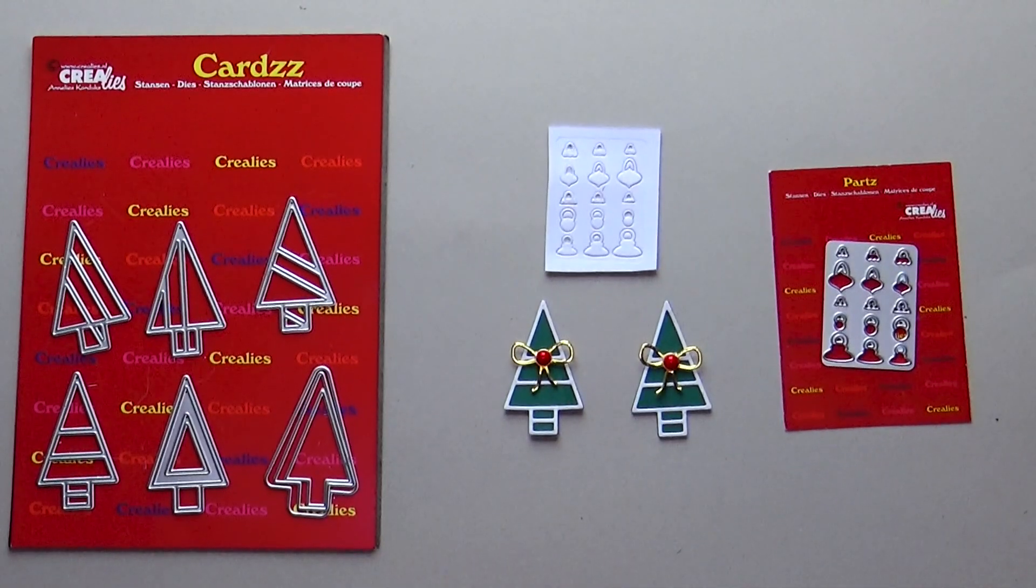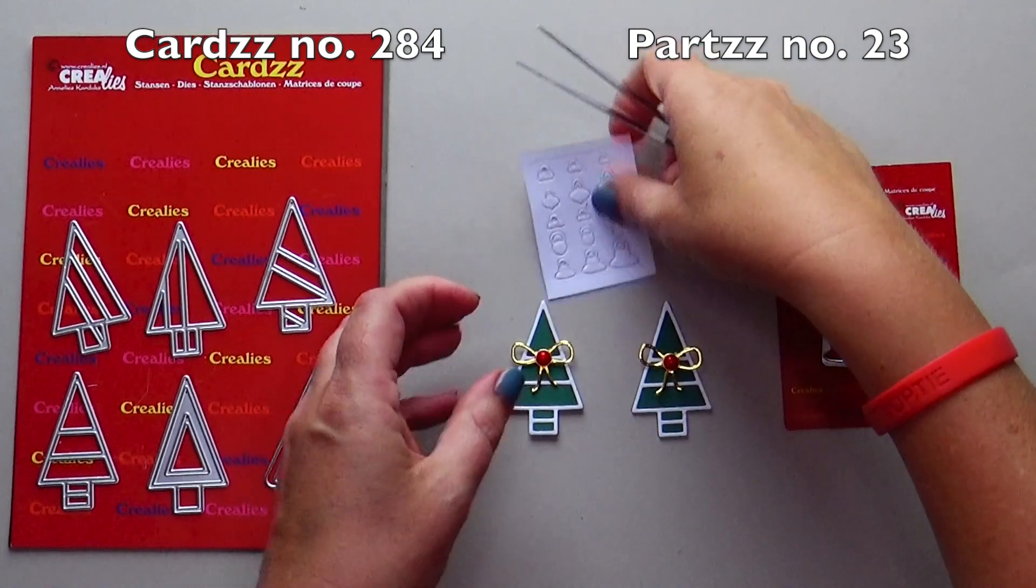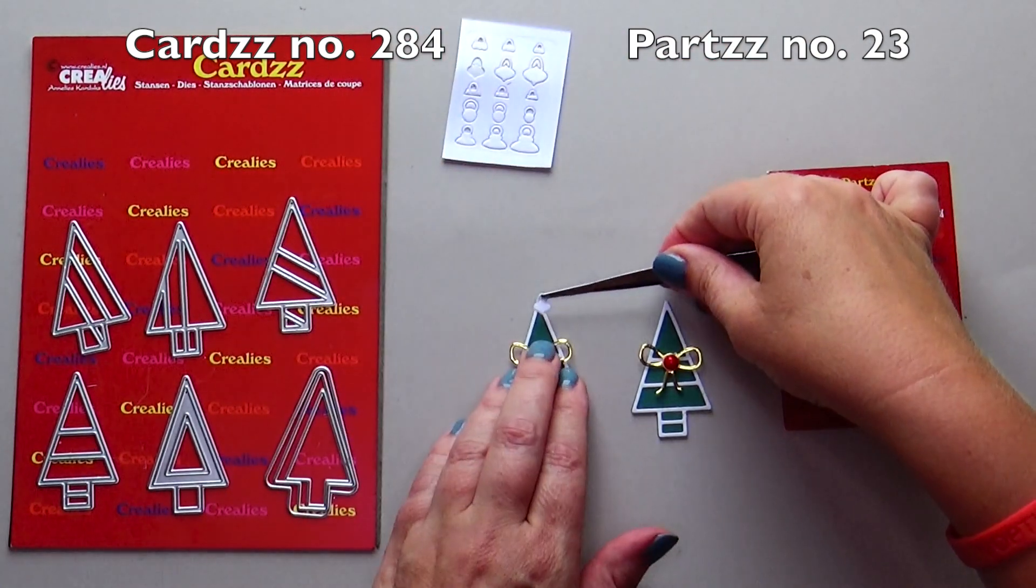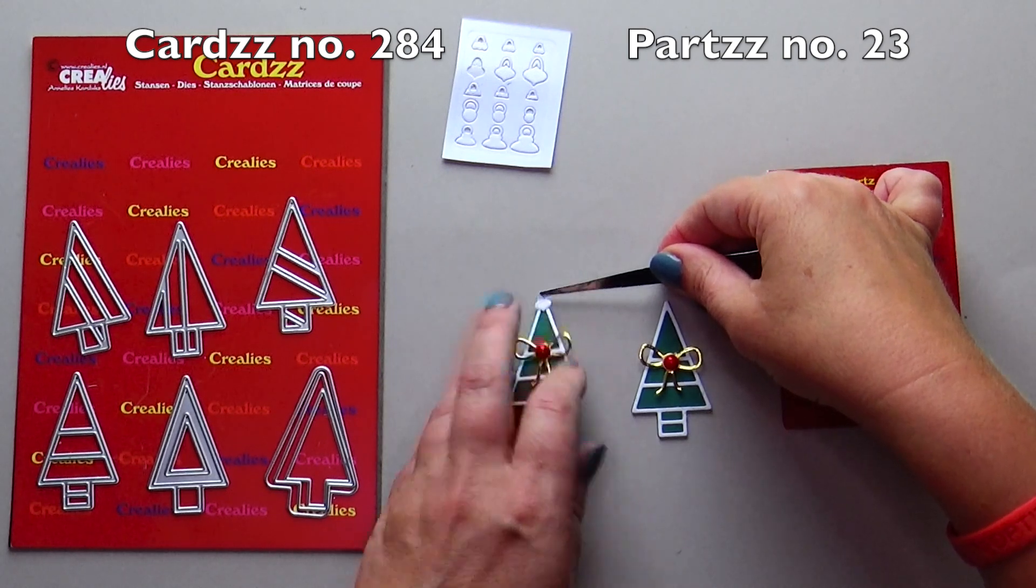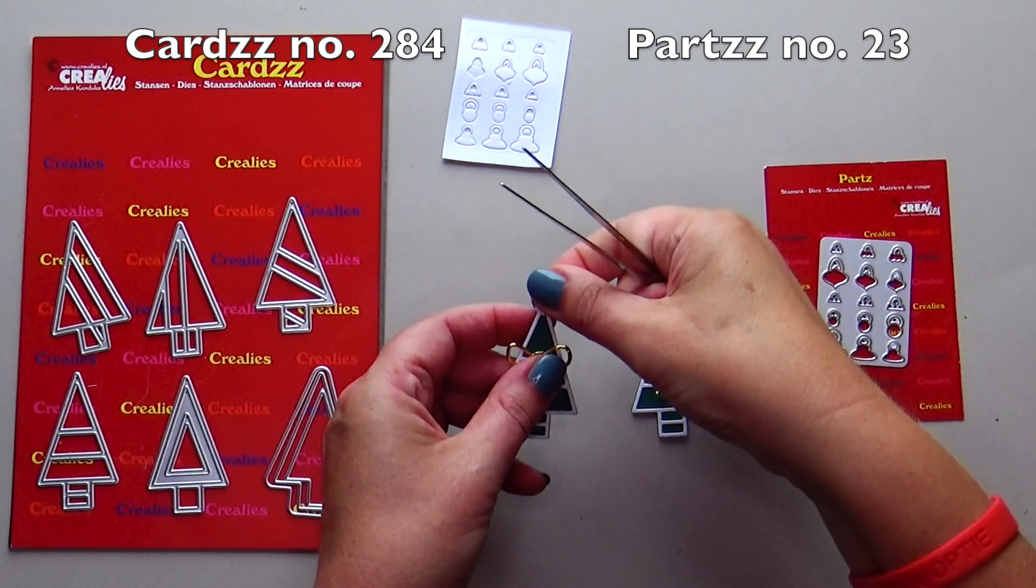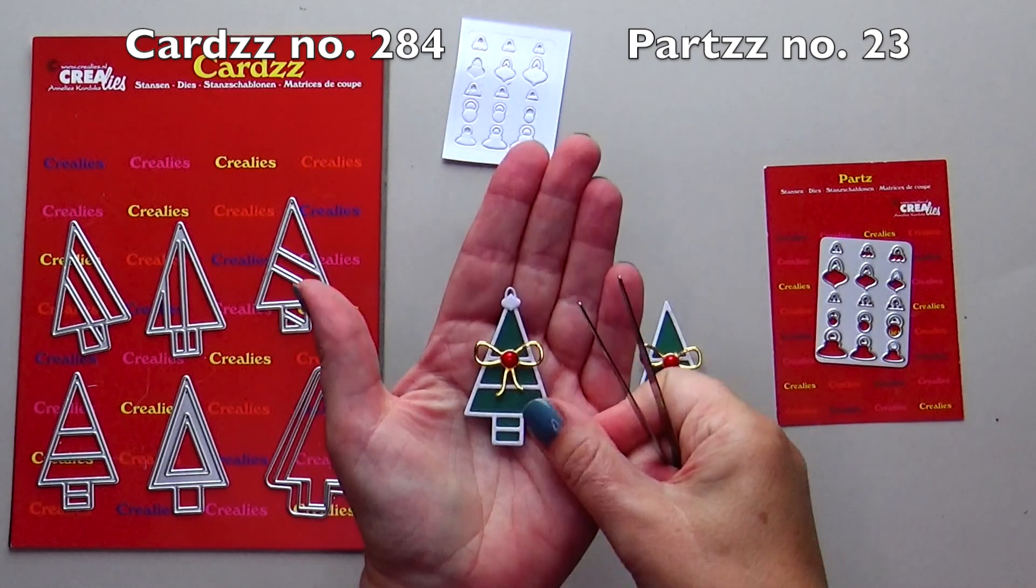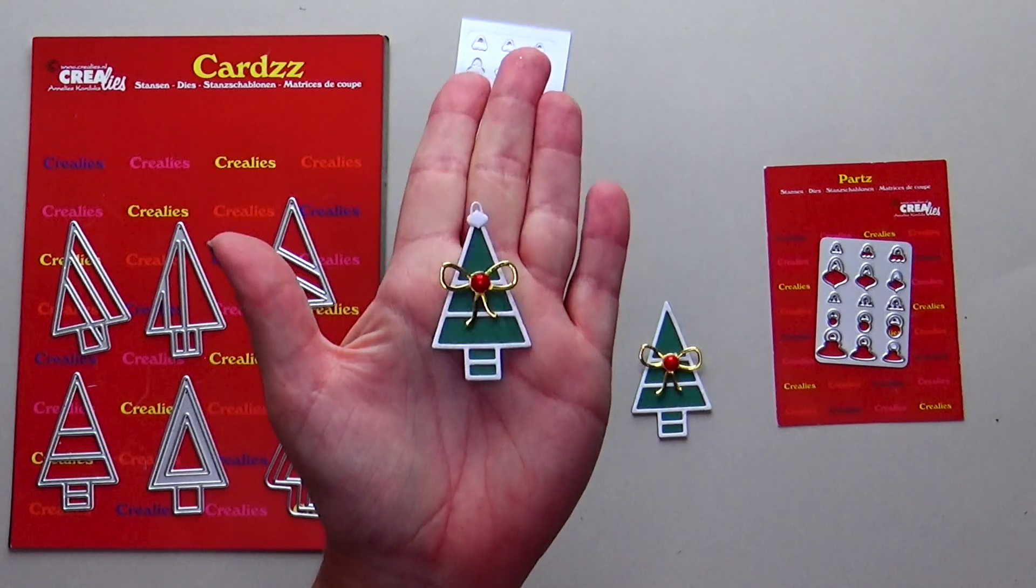Die cut a Christmas tree with cards elements number 284. Decorate the tree with a bow from set of tree number 62. Stick one pendant from parts number 23 on the Christmas tree and you have a Christmas ornament.